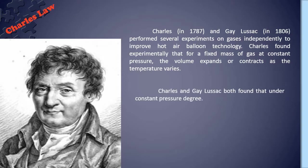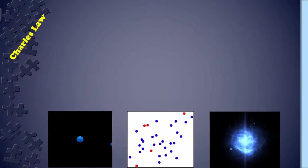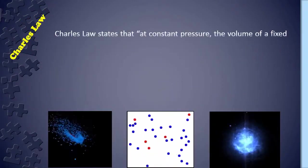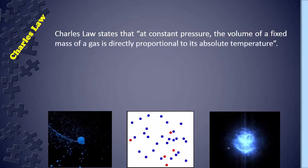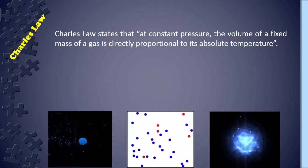Charles and Gay-Lussac both found that under constant pressure, for each degree rise in temperature, the volume of the gas increased by 1 over 273 of the original volume at 0 degree Celsius. Charles law states that at constant pressure, the volume of the fixed mass of gas is directly proportional to its absolute temperature.